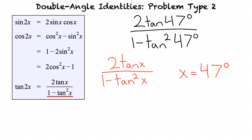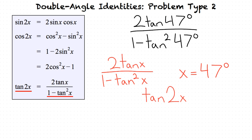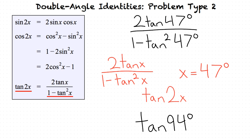Now that we know the form of our problem, let's find the corresponding double angle formula. Looking back at our table, we identify that the corresponding double angle formula is tangent of 2x. We then insert our x value into tangent of 2x, which results in tangent of 2 times 47 degrees. We then distribute the 2 into 47 degrees, which results in our final answer of tangent of 94 degrees.